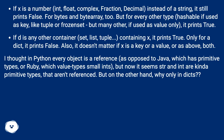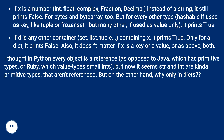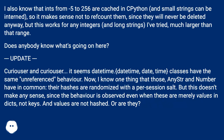Also, it doesn't matter if x is a key or a value, or both. I thought in Python every object is a reference, as opposed to Java which has primitive types, or Ruby which value-types small ints, but now it seems str and int are kinda primitive types that aren't referenced. But on the other hand, why only in dicts? I also know that ints from minus 5 to 256 are cached in Python, and small strings can be interned, so it makes sense not to ref-count them since they will never be deleted anyway. But this works for any integers and long strings — much larger than that range.